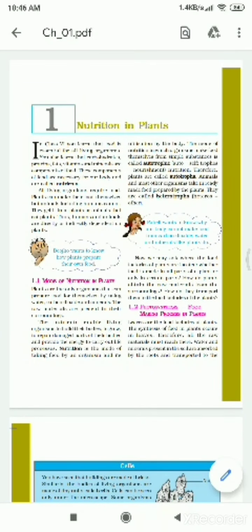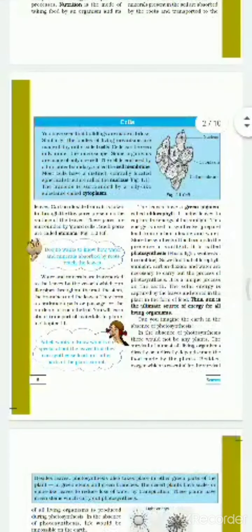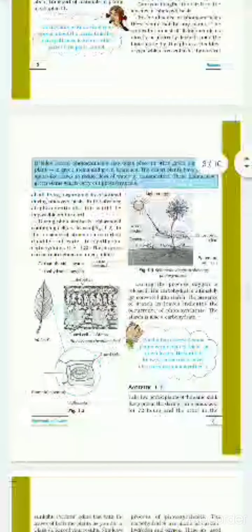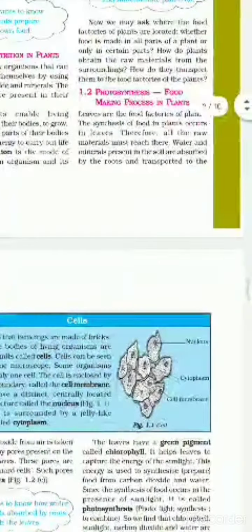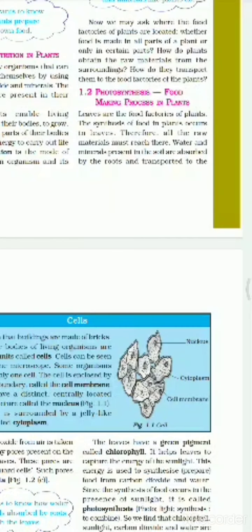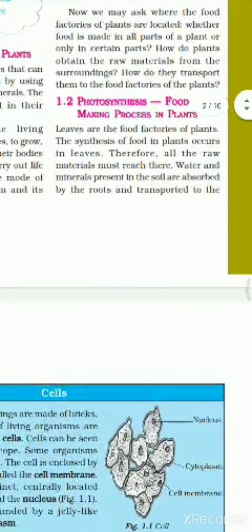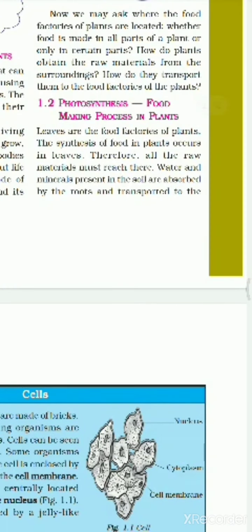Standard seven, chapter number one: Nutrition in Plants. In this chapter we will look at the photosynthesis process. Leaves are the food factory of the plant. Food in plants occurs in leaves.